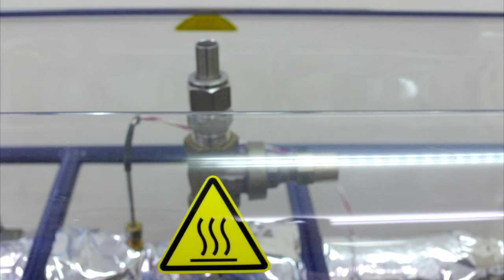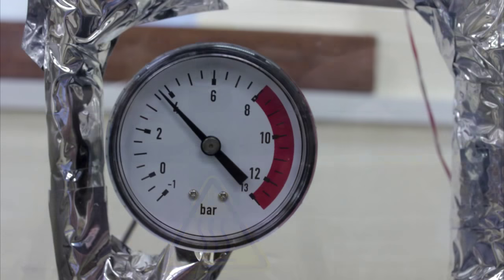Temperature sensor 1 can be seen next to the filler valve. This sensor registers the temperature inside the boiler. Both temperature sensor 1 and temperature sensor 2 are of a type known as platinum resistance thermometers.